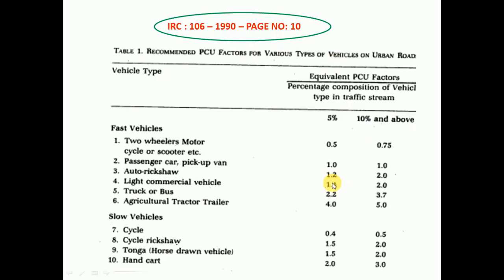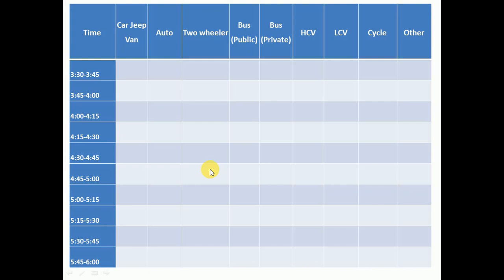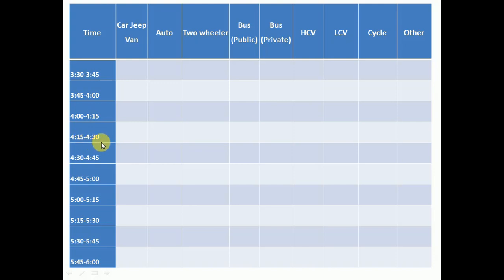Based on this vehicle classification, you can prepare the Traffic Volume Chart or Table. In this table, the first column is Time. The traffic volume should be conducted at each 15-minute interval. For example, if you start at 3:30, you count from 3:30 to 3:45, then 3:45 to 4:00, 4:00 to 4:15, 4:15 to 4:30, 4:30 to 4:45, 4:45 to 5:00 PM — likewise, splitting into 15-minute intervals.